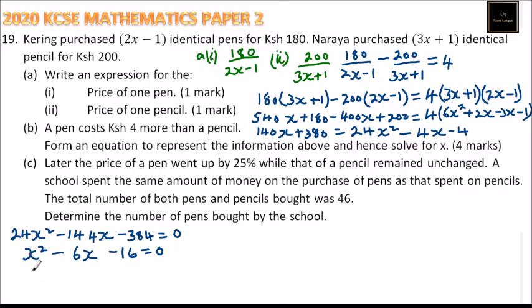Solving using factorization method, the factors are x minus 8 and x plus 2 equals 0. This means x equals 8 or x equals negative 2. Since x represents cost, it cannot be negative. Therefore, we ignore negative 2 and x equals 8.